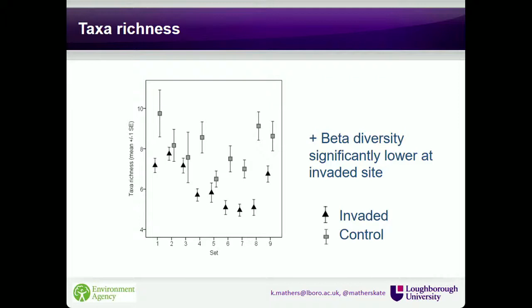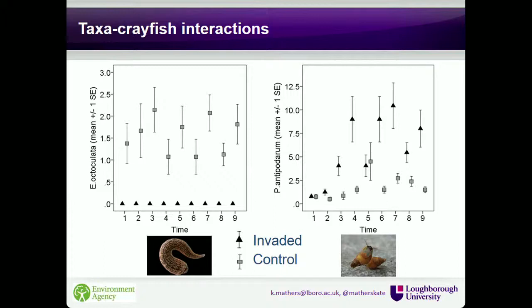When considering which taxa were affected: Erpobdella octoculata, a leech species, was practically locally extinct at the invaded site with only 8 individuals found versus around 250 at the control. Potamopyrgus antipodarum, an invasive mud snail, showed inconsistent effects and was actually found in greater abundances at the invaded site — highlighting that we shouldn't generalize; it may evade predation by going into silt deposits or may be trophically inefficient for crayfish to consume.